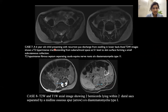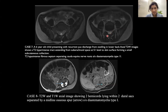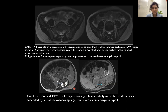The next case is of a six-year-old child presenting with recurrent pus discharge from a swelling in the lower back. The axial T2-weighted image shows a T2 hyperintense tract extending from the subarachnoid space at L1 level to the skin surface, with formation of a small subcutaneous collection. More cranial sections show a T2 hypointense fibrous septum separating the conus and nerve roots, suggestive of diastematomyelia type 2. The last case shows T2 and T1-weighted axial images demonstrating two hemicords lying within two separate dural sacs separated by a midline osseous spur, suggestive of diastematomyelia type 1.